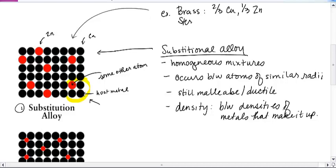Other ones, just so that you get an idea, sterling silver is also a substitutional alloy. It's about 92.5% silver and about 7.5% copper.